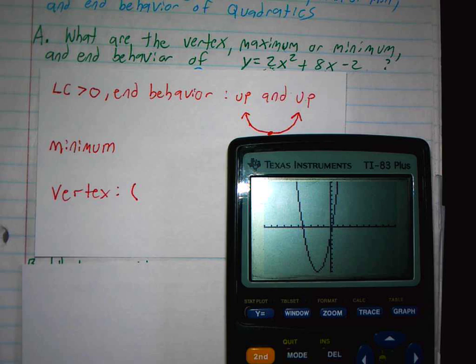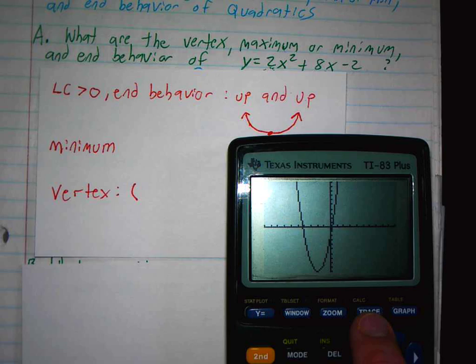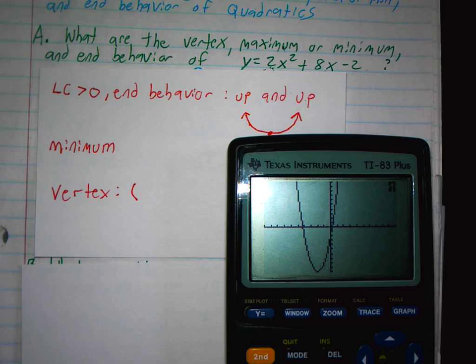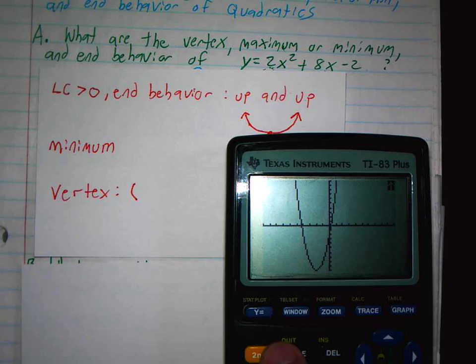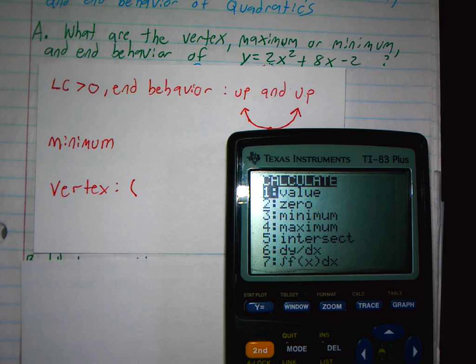We're going to calculate the minimum by going second. So you hit the yellow button, and then here it says trace. So second calc. And these are all the things you can calculate. So I did second calc, second calc.